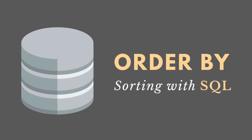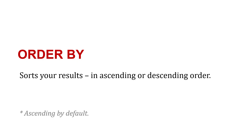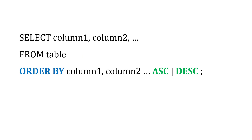In SQL, the ORDER BY clause is going to help us sort our results in ascending or descending order. Ascending is the default, and I'll explain that in a second. Here's what the syntax looks like: we select the columns we're interested in from a certain table, and we order or sort the results by certain columns in ascending or descending order.